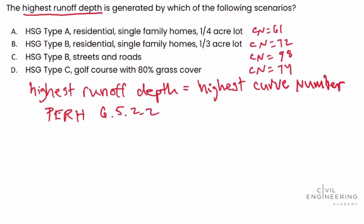Looking at all our answer choices and remembering that the highest runoff depth equals the highest curve number, we can easily see that the highest curve number is 98, which corresponds with answer choice C — HSG type B soil on streets and roads. So we circle that, and we've successfully solved this problem.